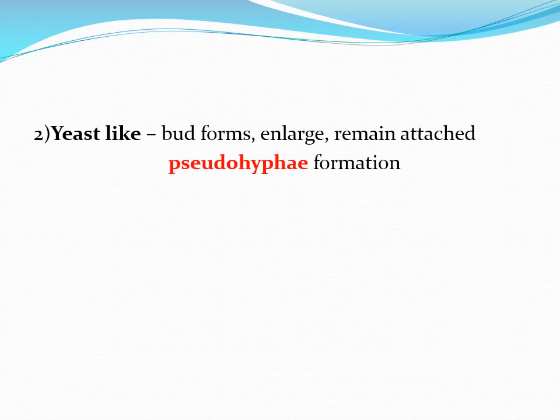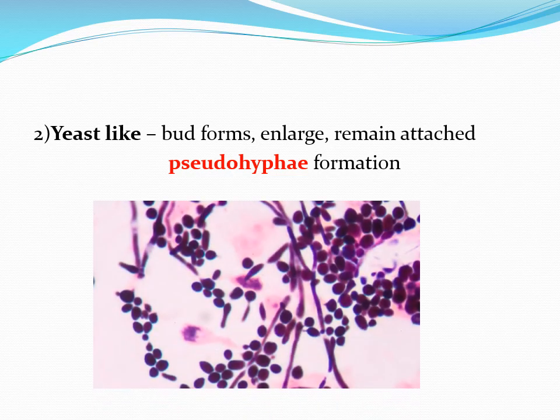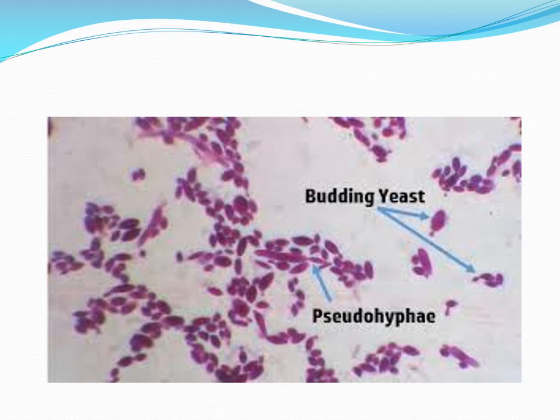The second form is yeast-like fungi. Morphologically they appear like yeast but also form pseudohyphae. When buds form during asexual reproduction, they do not detach from the parent cell — one bud forms, then another, remaining attached — resulting in pseudohyphae. Therefore they are called yeast-like fungi. The classic example is Candida. Candida is not a true yeast; Cryptococcus is the true yeast. You can see budding yeast cells and pseudohyphae in Candida preparations.